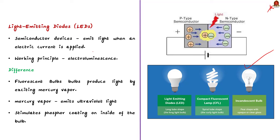What is the difference between LED and fluorescent bulbs? Light emitting diodes produce light by electroluminescence, whereas fluorescent bulbs produce light by emitting mercury vapour. This vapour then emits ultraviolet light that stimulates a phosphor coating on the inside of the bulb, thereby producing visible light. This is the basic difference between fluorescent bulbs and LEDs.